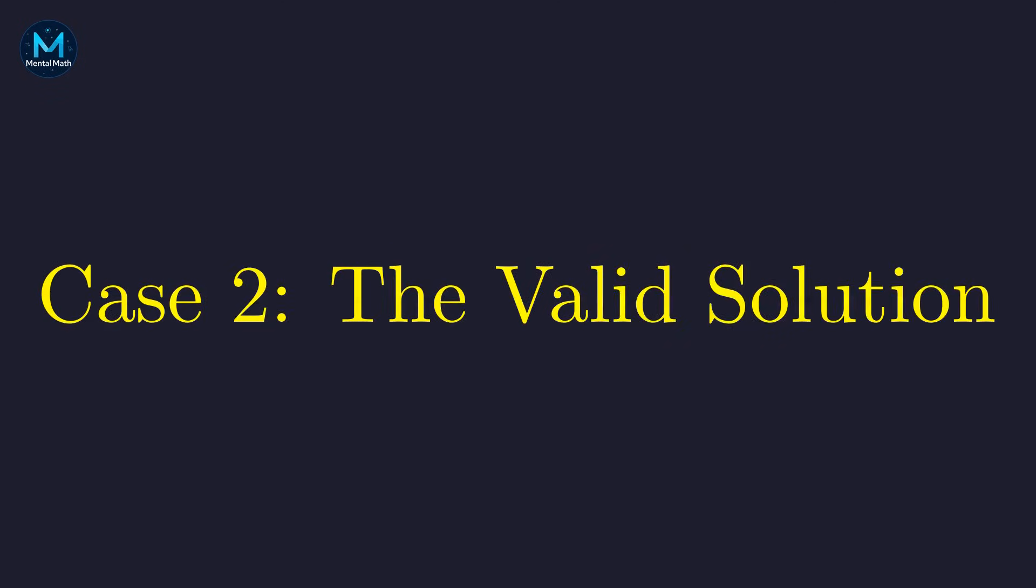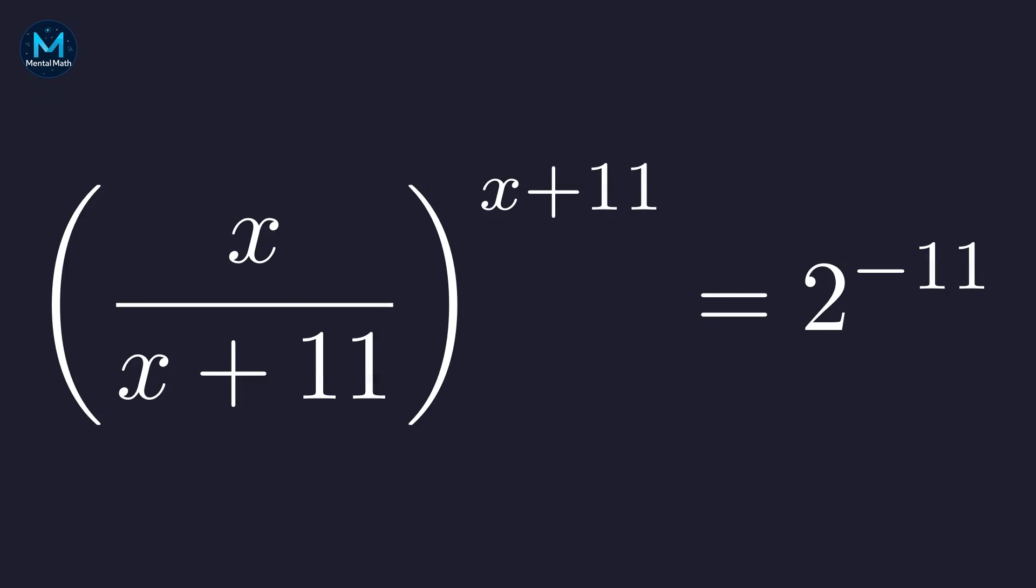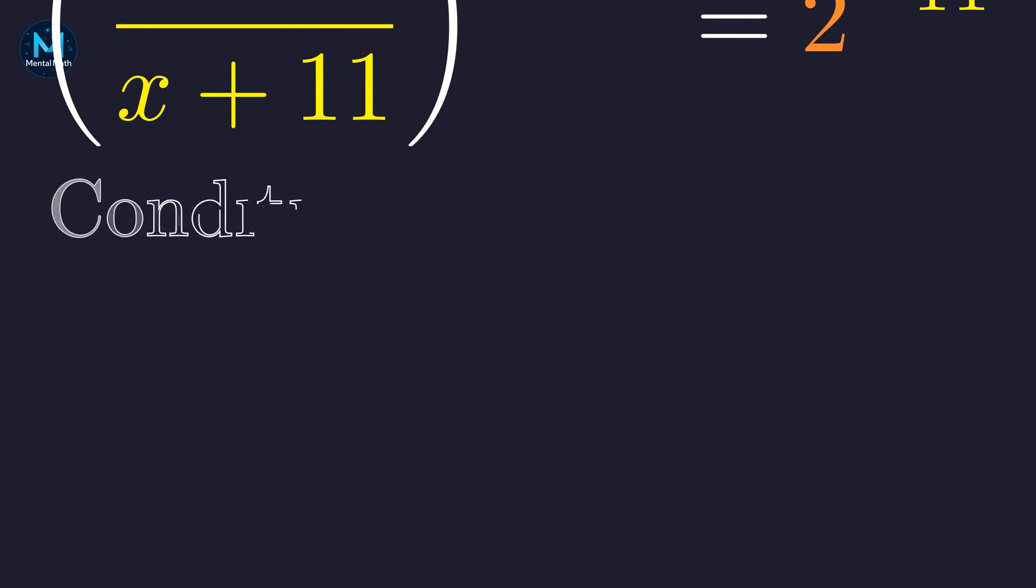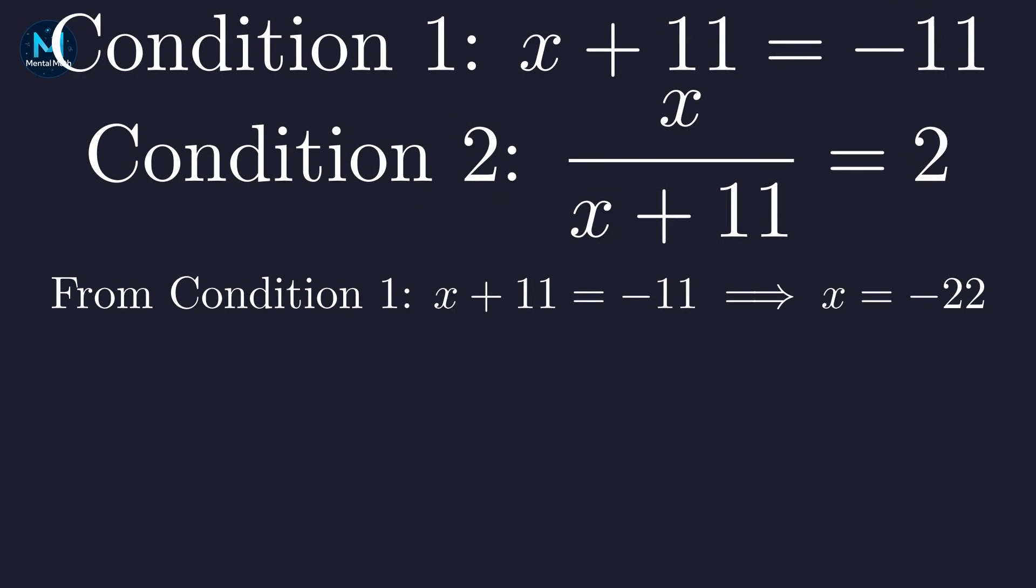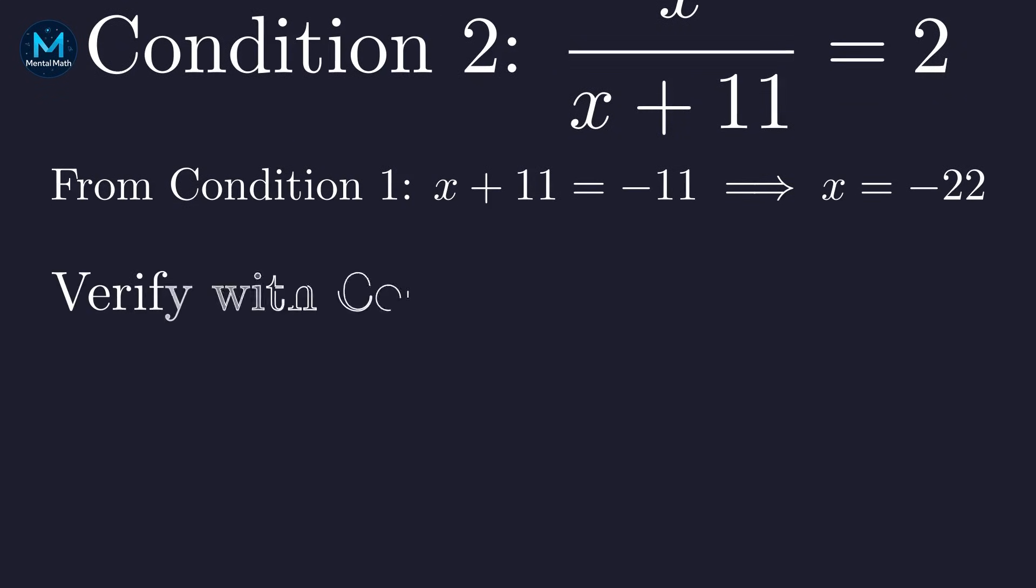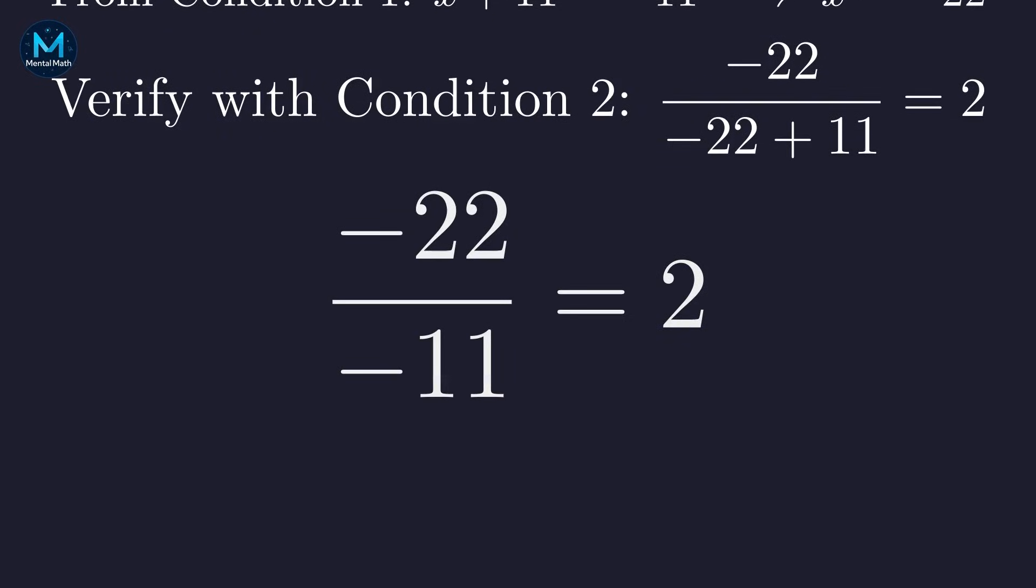Now, let's try the second form. This time, the right side is 2 to the negative 11. Let's try matching both the bases and the exponents. This gives us two conditions. x needs to satisfy both. From the first condition, x plus 11 equals negative 11, so x equals negative 22. Does this value of x also satisfy the second condition? The denominator becomes negative 11. Negative 22 divided by negative 11 is exactly 2. Perfect. Both conditions are satisfied.